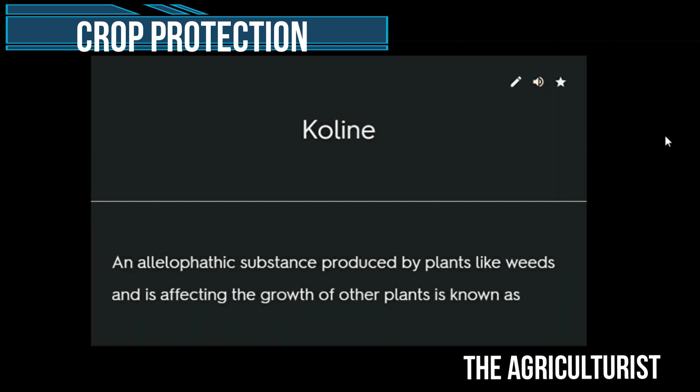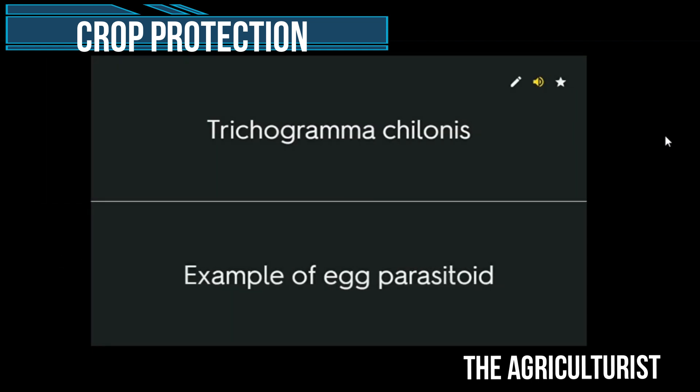Coline — an allellopathic substance produced by plants like weeds, affecting the growth of other plants. Trichogramma chilonis — example of egg parasitoid.